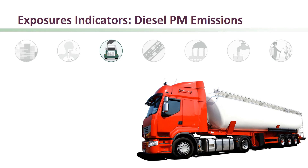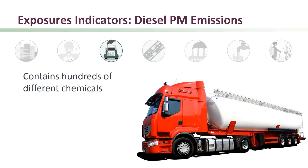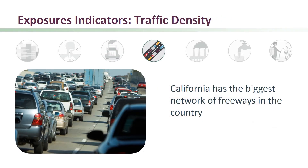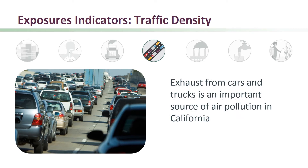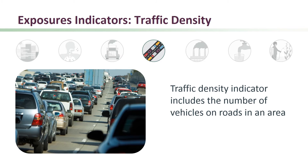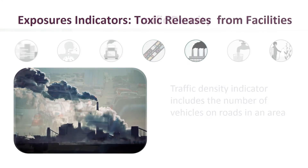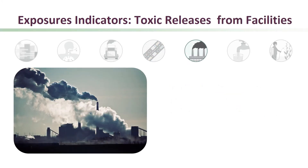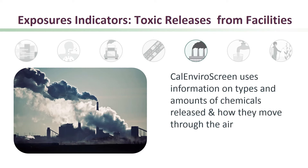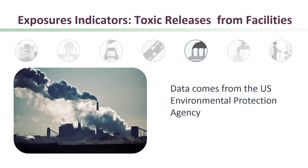Diesel PM emissions is another exposure indicator. Diesel PM contains hundreds of different chemicals, many of which are harmful to health. California has the biggest network of freeways in the country, and exhaust from cars and trucks is an important source of air pollution in much of the state. CalEnviroScreen includes a traffic density indicator, which uses information on the number of vehicles on the roads in an area. Toxic releases from facilities are sometimes detected in the area of communities. CalEnviroScreen uses information on types and amounts of chemicals released and how they move through the air; this information comes from the U.S. EPA.